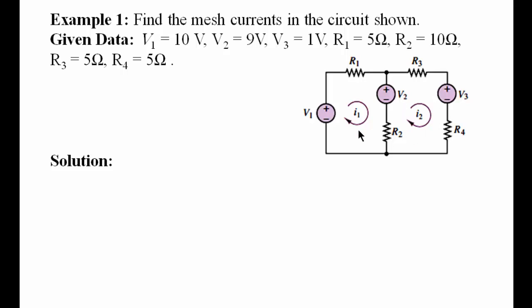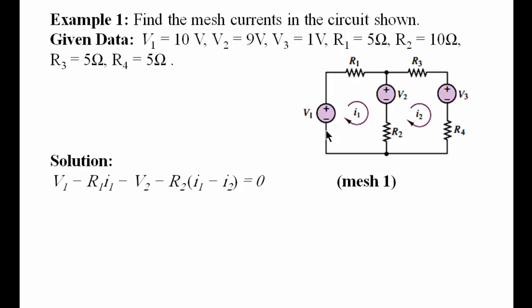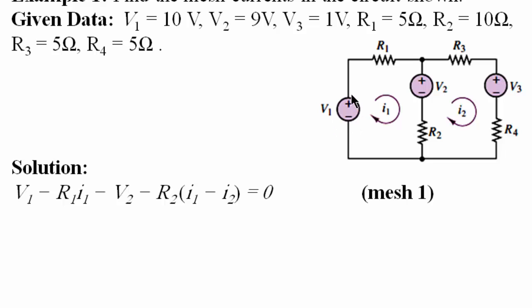Now we are going to apply KVL in each loop. We're going to write the equation for mesh one. Kirchhoff's voltage law states that the sum of voltages in a closed loop is equal to zero. We can start from any point in the loop. Each voltage source has two signs — minus and plus — and we're going to use the second sign in the equation. The second sign here is plus, so we write plus V1, minus R1 multiplied by I1. We say minus for all resistors because they consume energy.